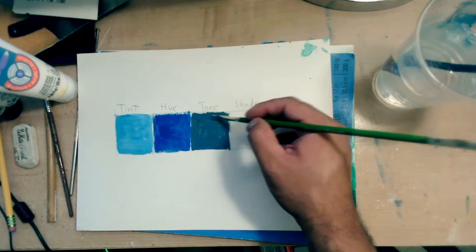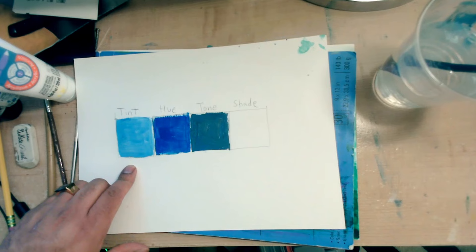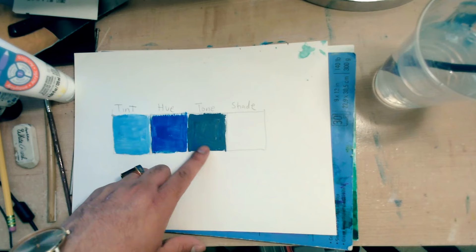So we have light. We have the regular hue of blue. Now we got tone. And we need to hop over to shade.